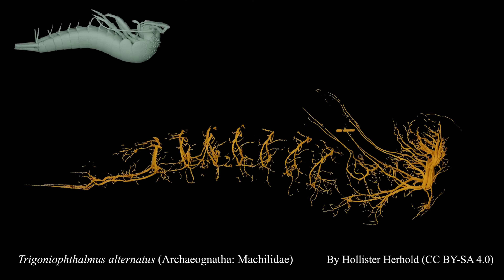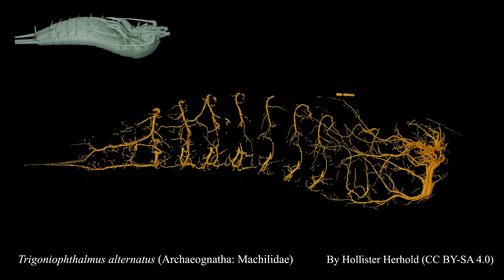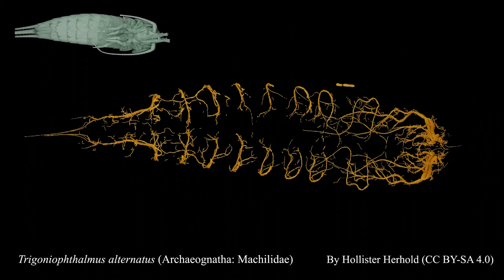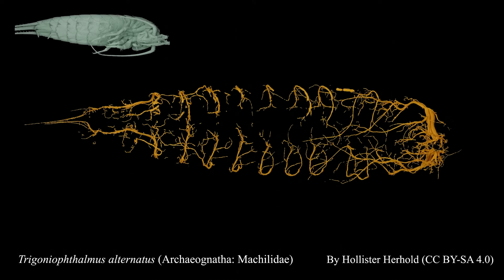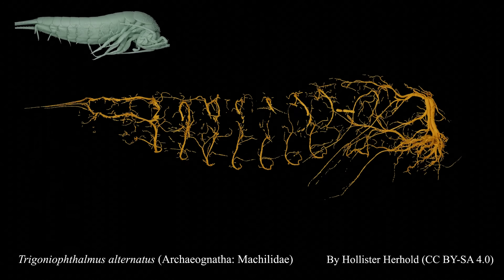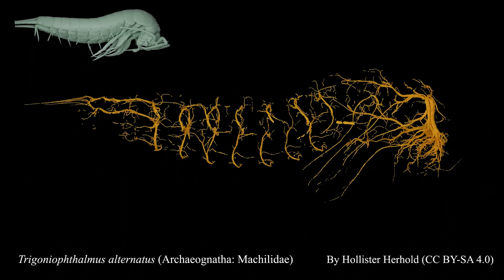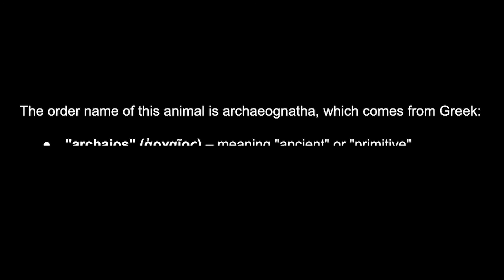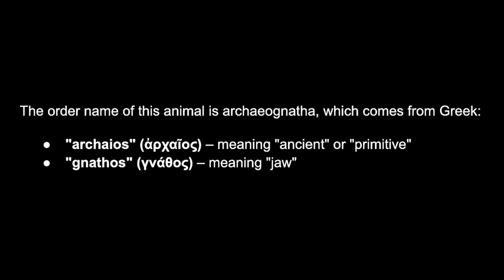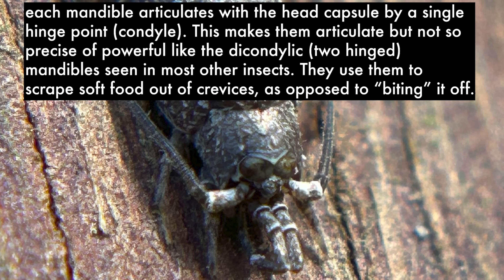Moving on to the general overview. The order name of this animal is Archaeognatha, which comes from the Greek 'Archaeos', meaning ancient or primitive, and 'Nathos', meaning jaw. It's easy to see why their name means ancient jaw, as you can see their monocondylic mandibles.